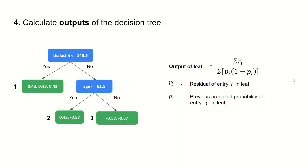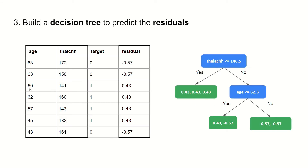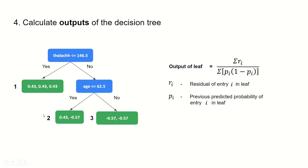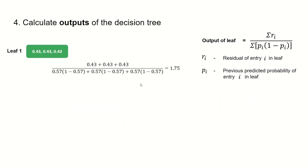Next, we need to calculate the outputs of the decision tree. For that, we can use the formula where R is the residual of entry i in the leaf, and p_i is the previous predicted probability of entry i in the leaf. So for example, if we were looking at leaf number one, r1 would be 0.43, r2 would be 0.43, and r3 would be 0.43. And p1, p2, and p3 would all be 0.57, since that was our previous predicted probability. Applying the formula to leaf one, we have 3 times 0.43 on the top, and 3 times 0.57 times (1 minus 0.57) on the bottom, and this gives us a value of 1.75. That's our output for leaf one.